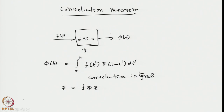Now we show what is called the convolution theorem. The convolution theorem simply states that if we take the Laplace transform of the convolution phi(t) with respect to t — giving phi tilde(s), where s is the conjugate variable — it is simply the product of the Laplace transform of f multiplied by the Laplace transform of the response function, both with respect to the same variable.